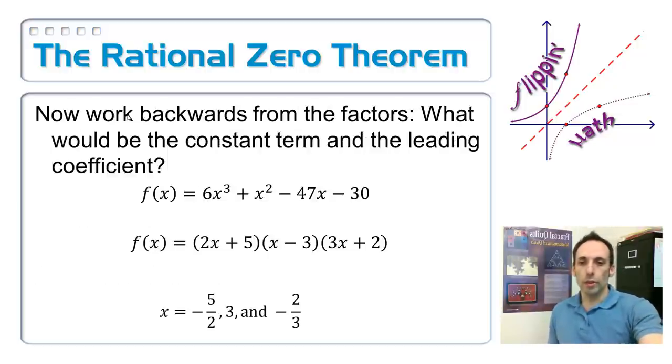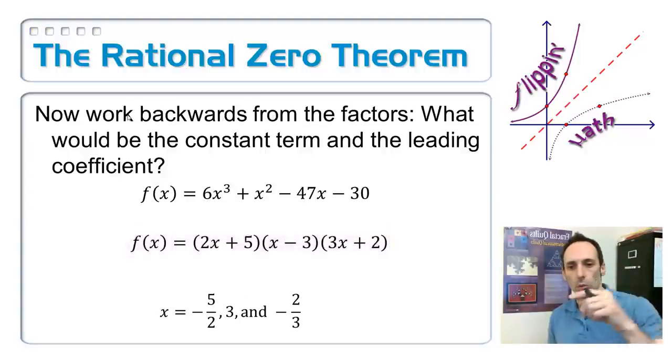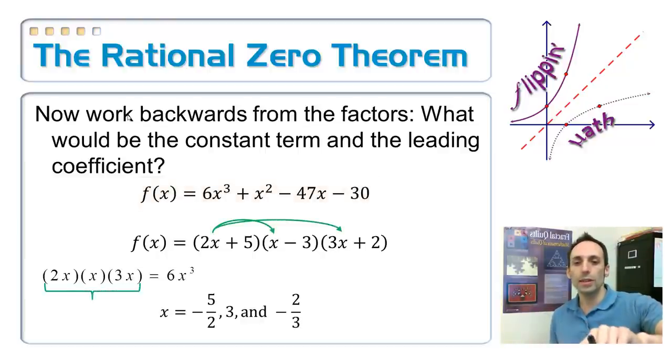Okay. So now, working backwards from the factors, let's see what we have. If I were to foil out what's right in the middle, foil out the factored form, I would get the expanded form that's right up above it. So I'm not going to foil out the whole thing. Just looking at the first terms and the last terms.